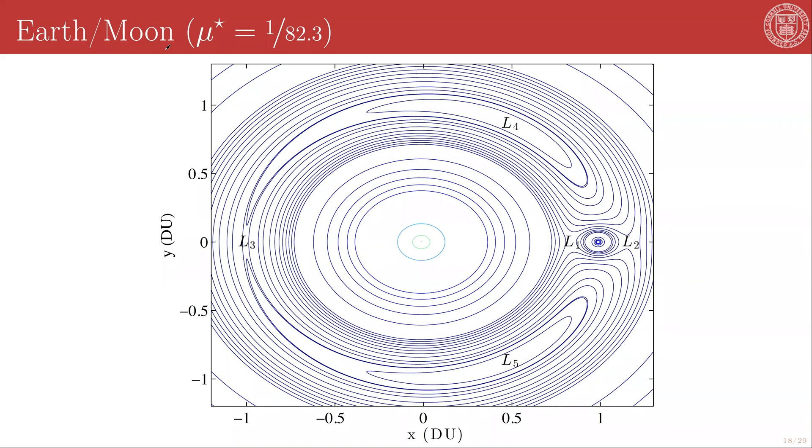We are going to be looking at the Earth-Moon system, which has a mu-star value of about 1 over 82.3. Here's yet another rendering of the hill curves of this system. Here's the Earth, here's the Moon, and there are all of the Lagrange points.